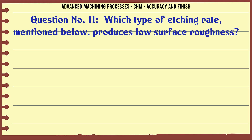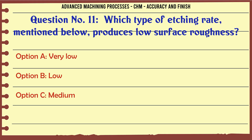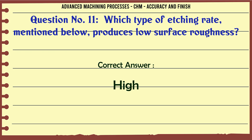Which type of etching rate mentioned below produces low surface roughness? A. Very low. B. Low. C. Medium. D. High. The correct answer is high.